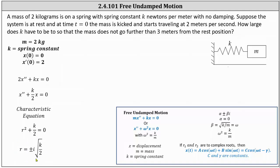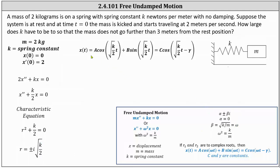Notice we have two complex solutions, and therefore the general solution is in the form x of t equals a times cosine of omega t plus b times sine of omega t, which we can also express as c cosine of the quantity omega t minus gamma. Recall when we solved these types of equations before with complex solutions, we use the form alpha plus or minus beta i, where in this case alpha is zero and beta is the square root of k divided by two, and beta is the same as omega. This indicates the general solution is x of t equals a cosine of the square root of k divided by two times t plus b sine of the square root of k divided by two times t, which we can also express as c times cosine of the quantity square root of k divided by two times t minus gamma.